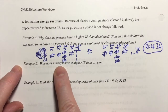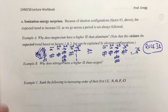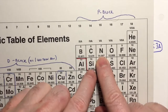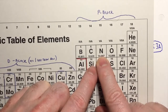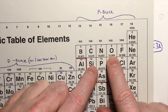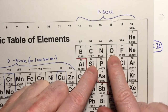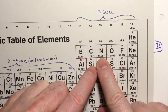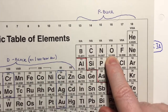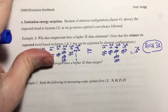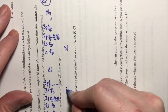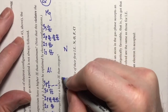Coming back to this question: why does nitrogen have a higher IE than oxygen? According to the expected trend due to rule two, we would expect oxygen to have the higher IE because it has an additional proton — that's what rule two tells us generally. However, contrary to that expected trend, it's nitrogen that has the higher ionization energy. Let's take a look at their electron configurations. They both have electrons that go up to the 2p subshell.